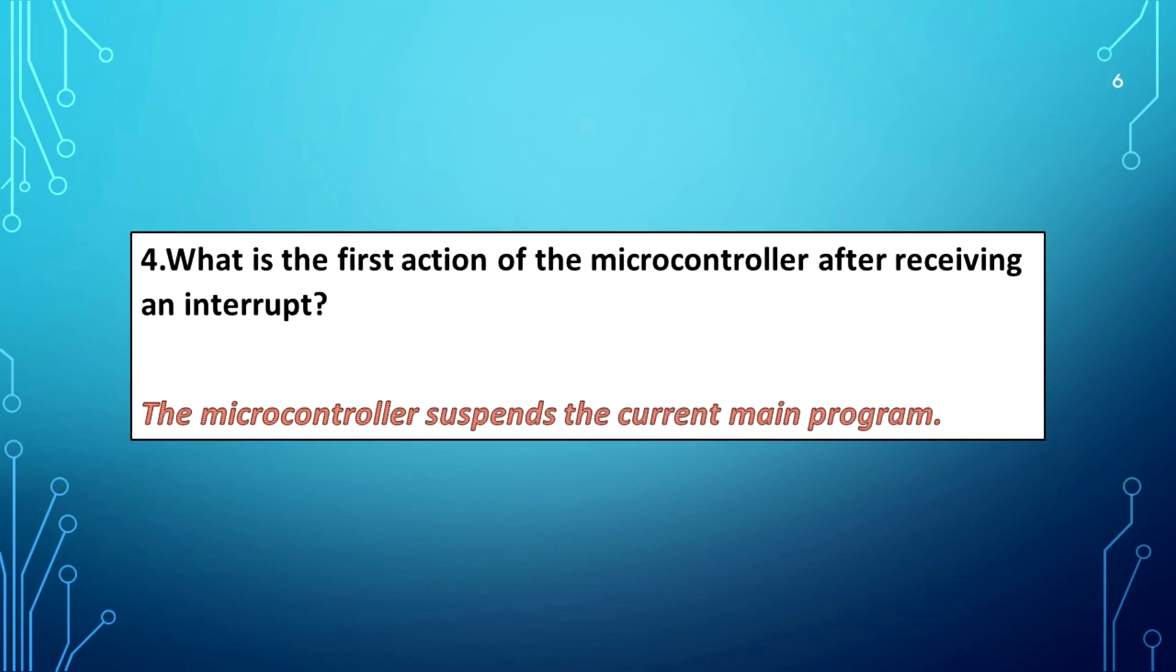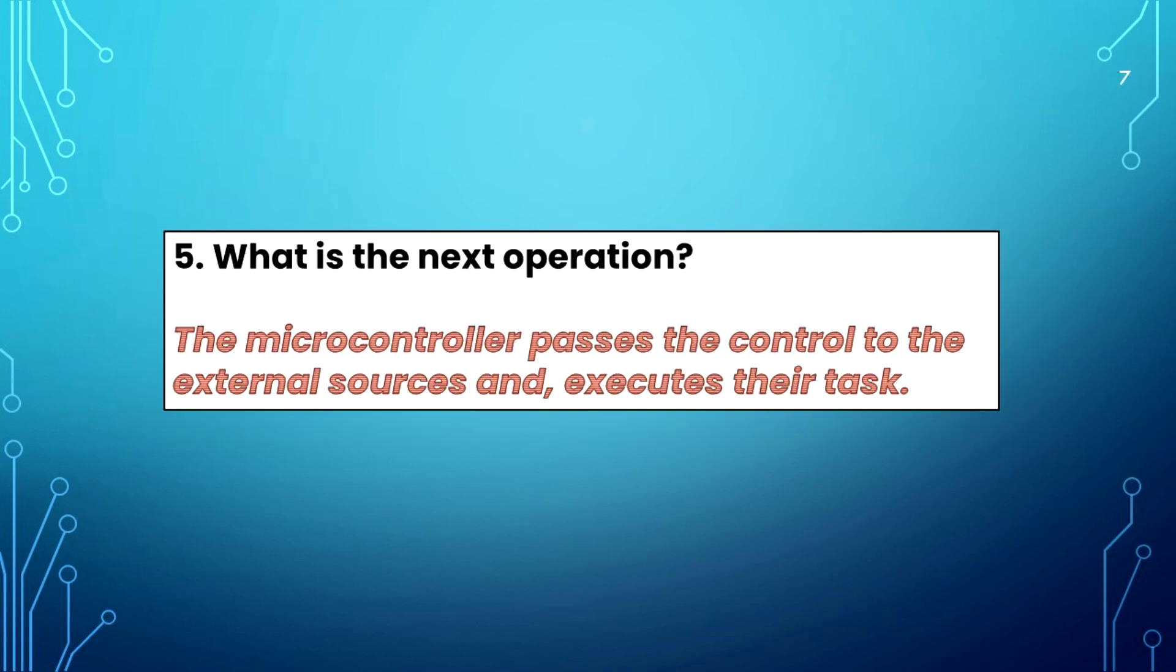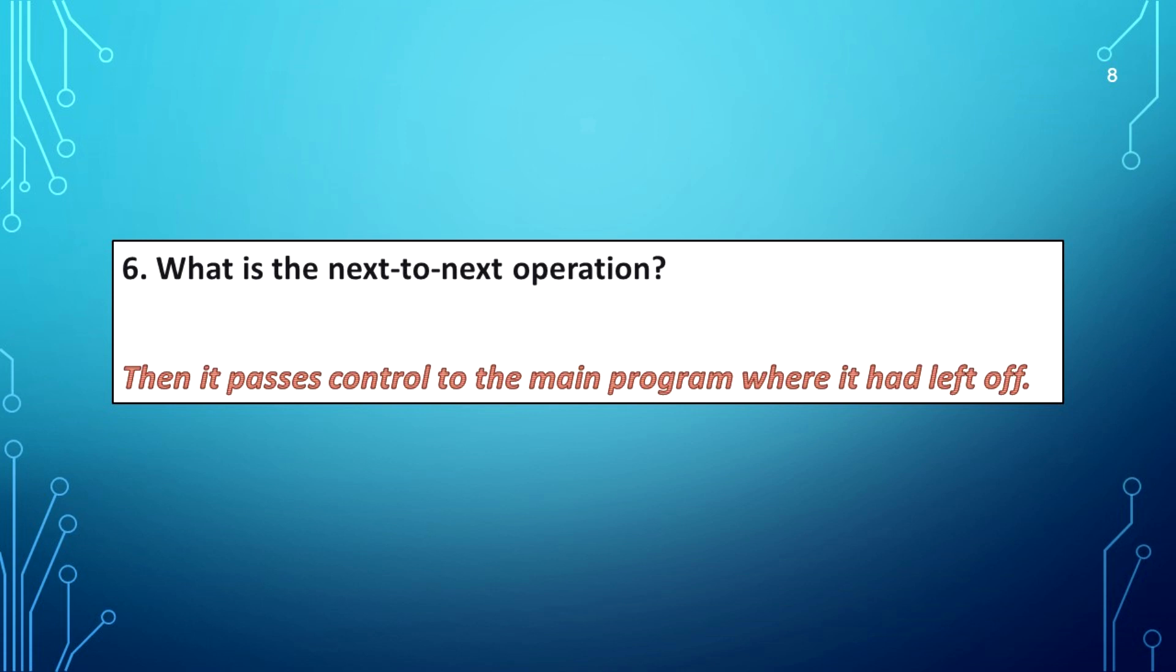What is the first action of the microcontroller after receiving an interrupt? The microcontroller suspends the current main program. What is the next operation? The microcontroller passes control to the external source and executes their task. What is the next operation? It then passes control to the main program where it had left off.